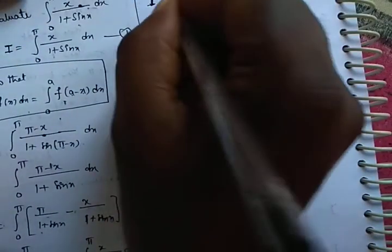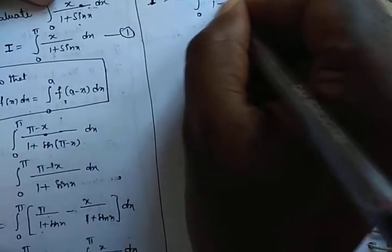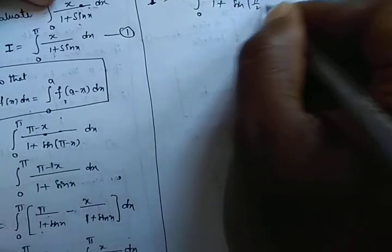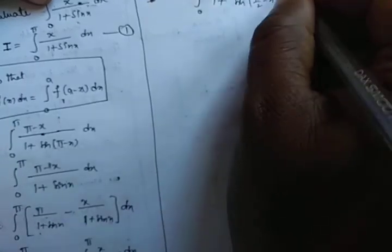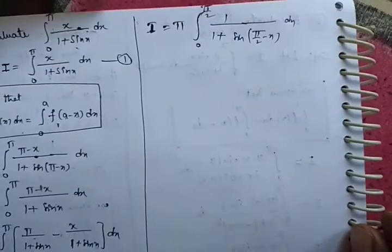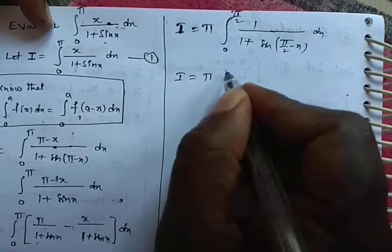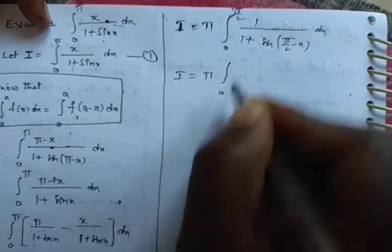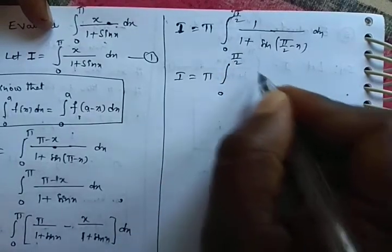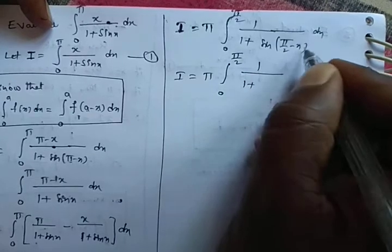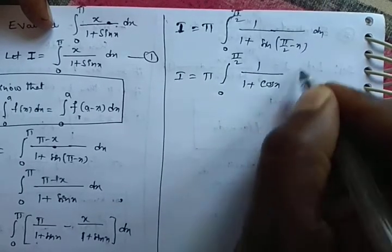Applying the same property again: I equals π times the integral from 0 to π/2 of 1/(1 plus sin(π/2 minus x)) dx. Since sin(90 minus x) equals cos x, this becomes I equals π times the integral from 0 to π/2 of 1/(1 plus cos x) dx.